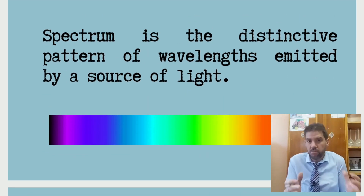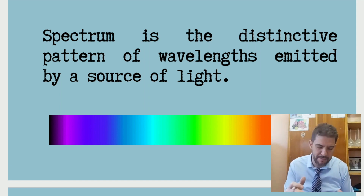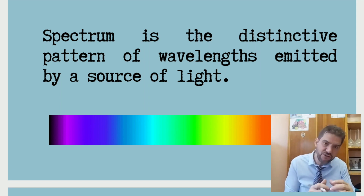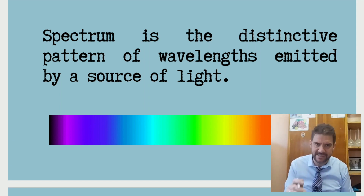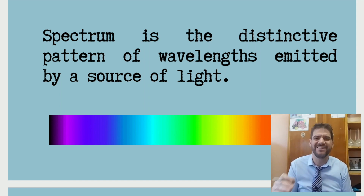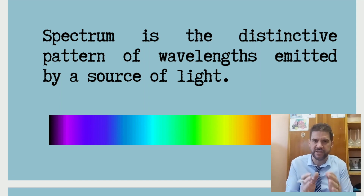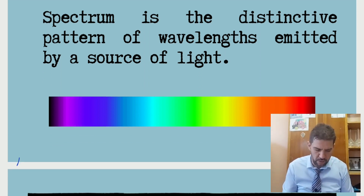The spectrum of light, by definition, is a distinctive pattern of wavelengths emitted by a source of light. You can see the different colors that compose the spectrum. If we refer to one color, it's what we call monochromatic light. Monochromatic means one color. So monochromatic light could be blue light, for instance, which has certain wavelengths as well as a certain frequency.